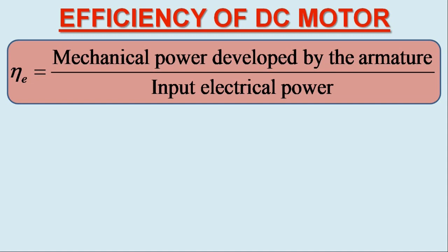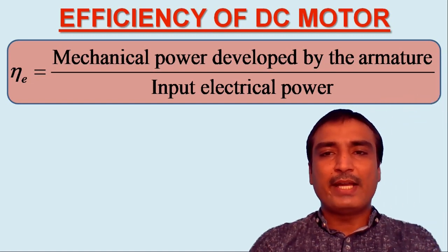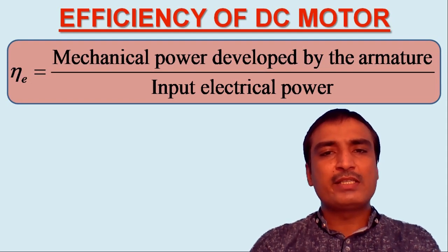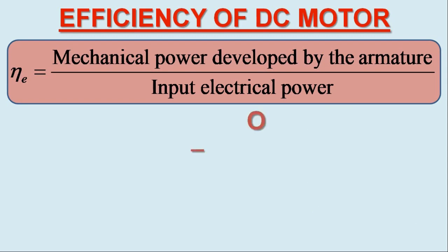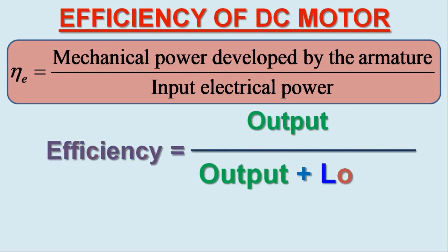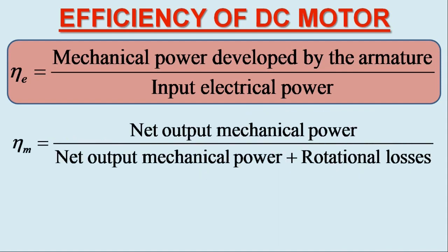In view of the second partition in the power flow separation diagram for DC motor, we may define the mechanical efficiency using the alternate equation: efficiency equals output over output plus losses. We may write mechanical efficiency equals net output mechanical power over net output mechanical power plus rotational losses.